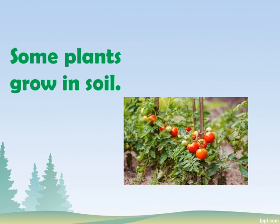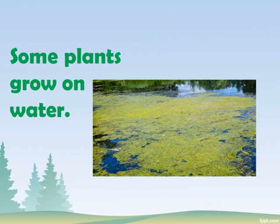Some plants grow in soil — many vegetables like radish, carrots, etc., and many flowering plants like roses, tulips, and sunflower all grow in soil. But not all plants grow in soil. Some plants grow on water, like algae — it grows on water.